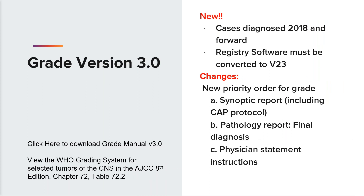The Grade Manual version 3.0 is for use with cases diagnosed 2018 and forward, and only after the registry software conversion to the NACER data standards B23. Within the grade manual, there is a new note applicable for solid tumors. In the general grade coding instructions for all schemas, a priority order has been added for the assignment of grade: synoptic report including the CAP protocol is first priority, followed by a pathology report and final diagnosis as second priority, and then a physician statement of grade if no other info is available as third priority.